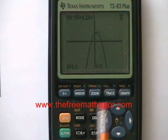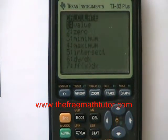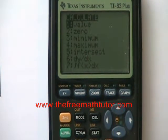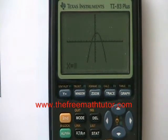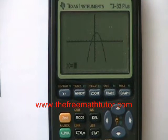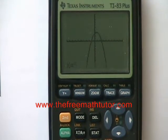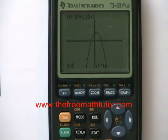Let's find one more point. 2nd TRACE. I'm hitting ENTER for value again. This time I'm curious to know what is the y-coordinate when the x-coordinate is 5. So x = 5, hit ENTER. And the y is -16.